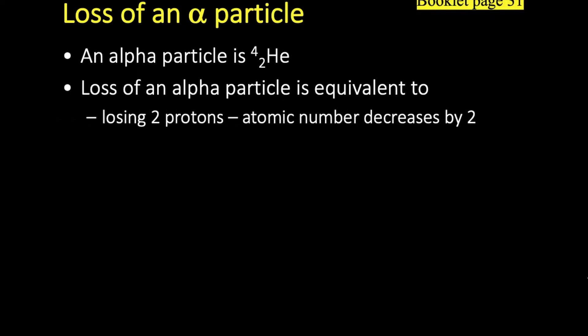The loss of an alpha particle is the same as losing two protons, so your atomic number decreases by two and losing two neutrons. So overall your mass number will decrease by 4.